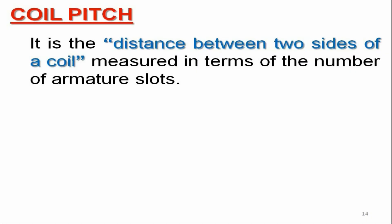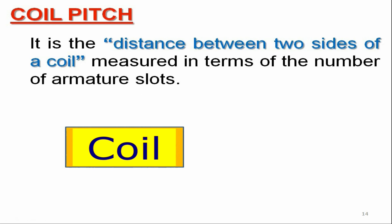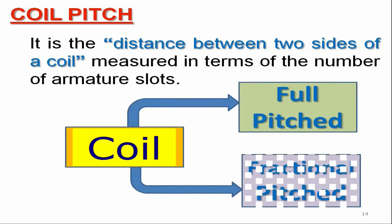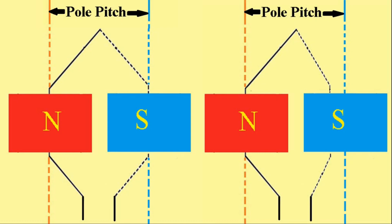The second term is coil pitch, which is nothing but the distance between two sides of a coil measured in terms of the number of armature slots. Note that depending on pole pitch and coil pitch, a coil may be categorized as full-pitched or fractional-pitched. If the pole pitch and coil pitch are equal, the coil is called full-pitched; otherwise it is called a fractional-pitched coil.